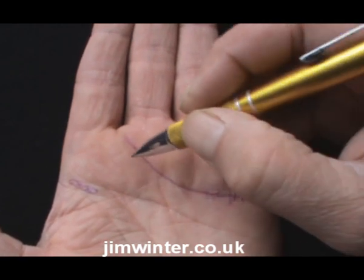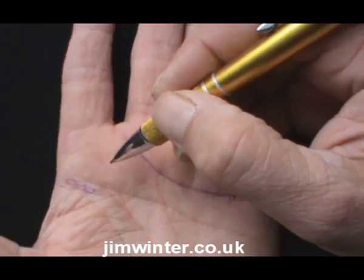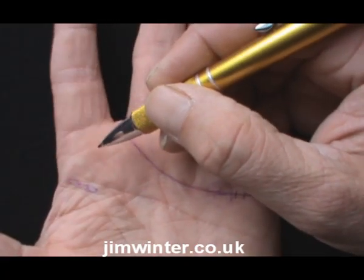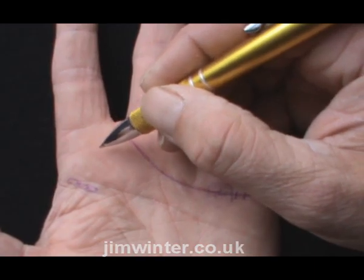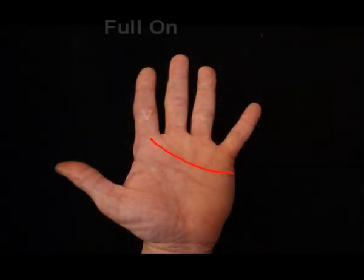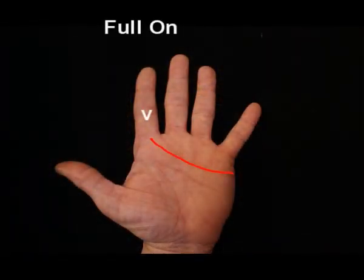If the line starts on or under the index or Jupiter finger, previously referred to as the Julius Caesar finger, it can show someone who is more full on. They may wear their hearts on their sleeves and be more sentimental. Their love style can be more idealistic.